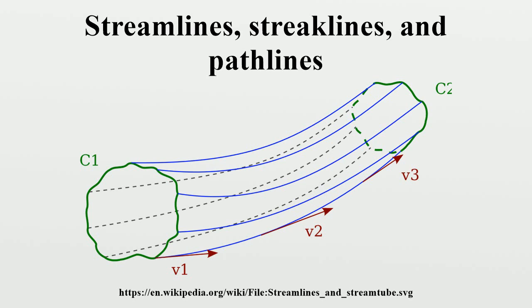If a line, curve, or closed curve is used as start point for a continuous set of streamlines, the result is a stream surface. In the case of a closed curve in a steady flow, fluid that is inside a stream surface must remain forever within that same stream surface, because the streamlines are tangent to the flow velocity.